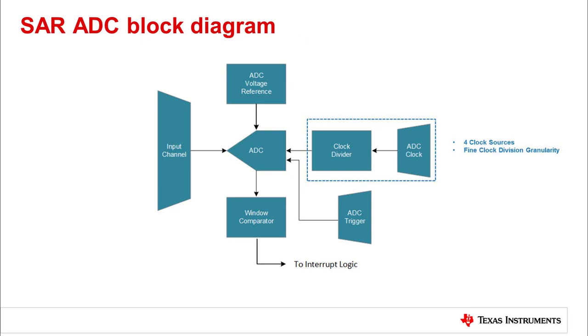There are four clock sources to choose from, each of which can be divided with fine granularity. This will allow designers to configure the ADC for the lowest possible power consumption while still meeting their system specs.